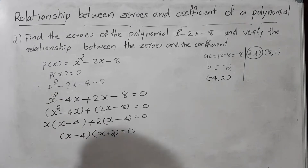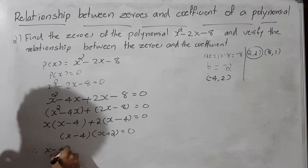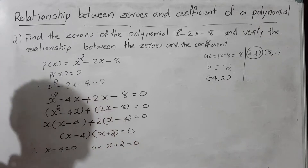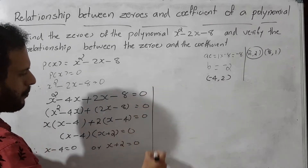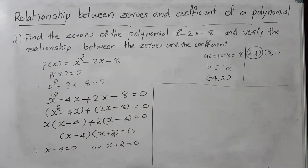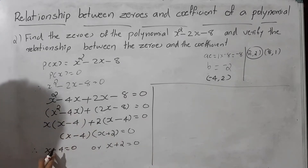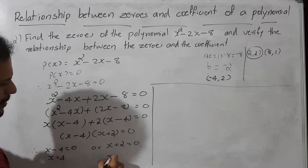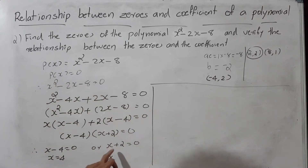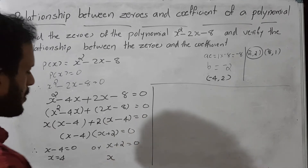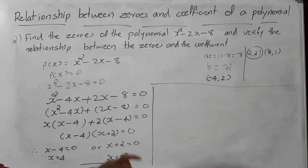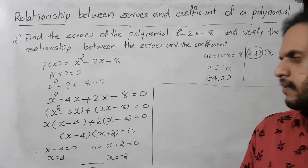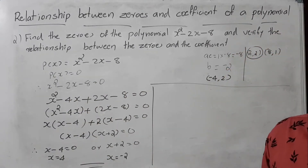So x minus 4 equals 0 or x plus 2 equals 0. From the first: x equals 4. From the second: x equals minus 2. The zeros of the polynomial x² minus 2x minus 8 are x equals 4 and x equals minus 2.